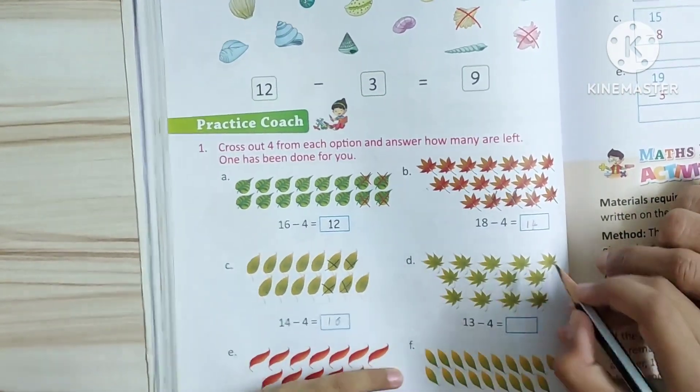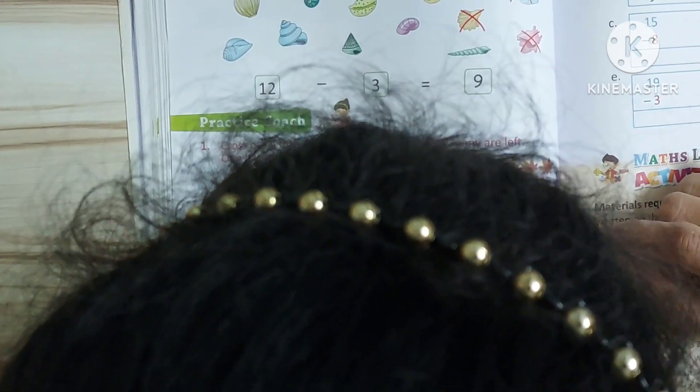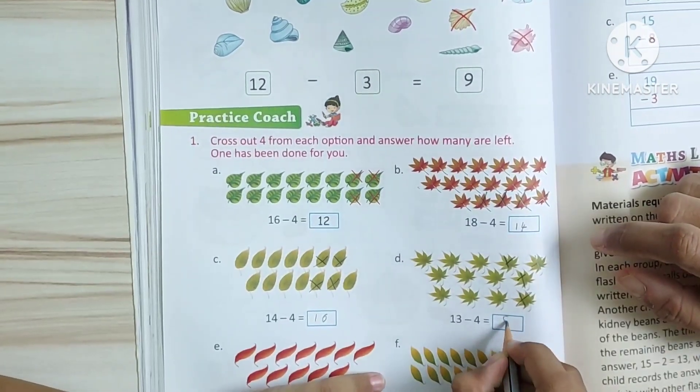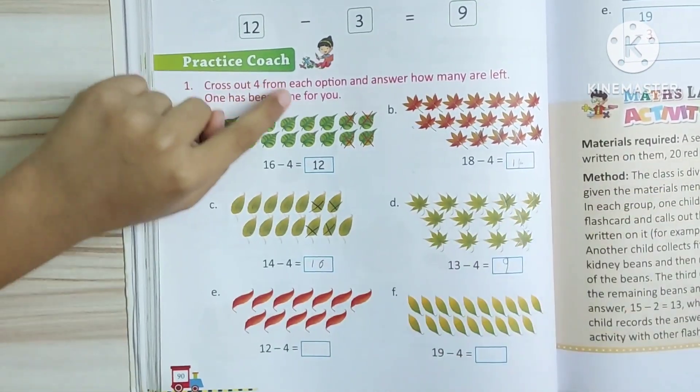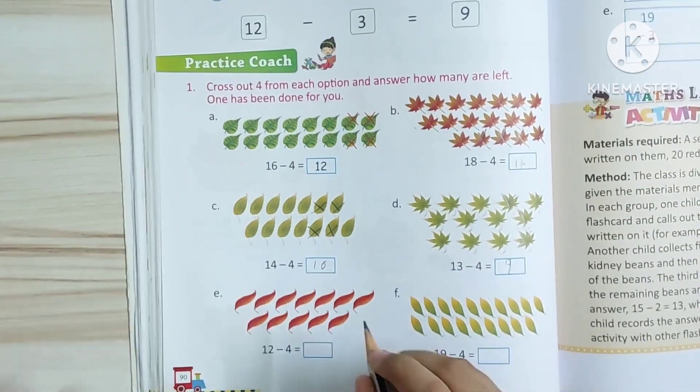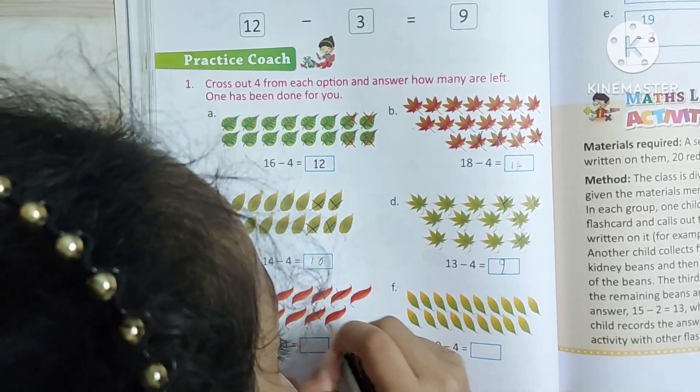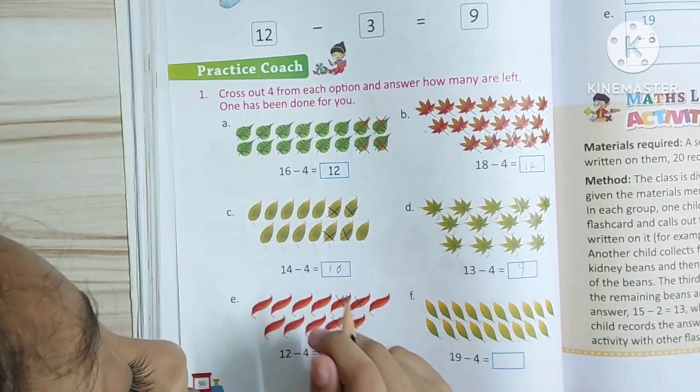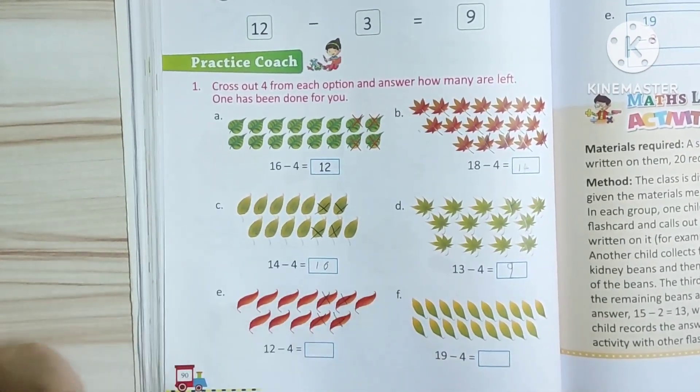So, here cross out 4. Okay. Now count. 1, 2, 3, 4, 5, 6, 7, 8. 8.